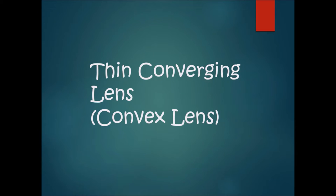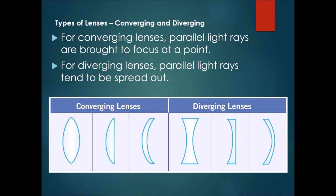Hi everyone, so today we'll be talking about the thin converging lens or the convex lens. This is the very last part of the light chapter. There are different types of lenses: converging and diverging lenses.